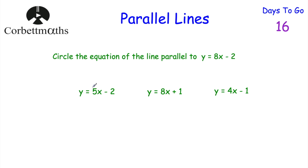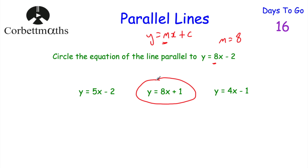Okay, so our choices are y equals 5x minus 2, y equals 8x plus 1, and y equals 4x minus 1. If two lines are parallel, they've got to have the same gradient. The gradient of y equals 8x subtract 2 is m equals 8, because in y equals mx plus c we look for the number in front of the x. The gradient of y equals 8x plus 1 would also be 8. So if you circle that one, well done — those two lines are parallel. The gradient of the other options are 5 and 4, so neither matches 8. That is our answer.